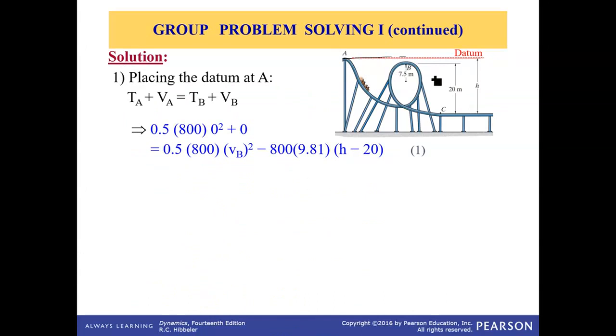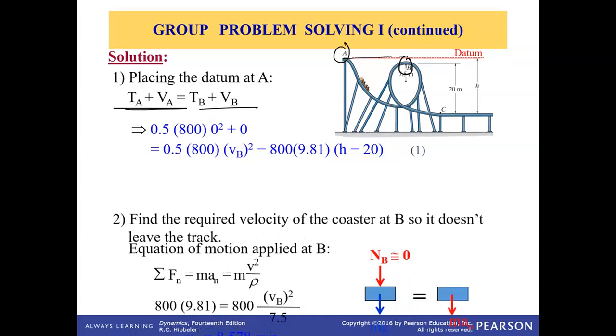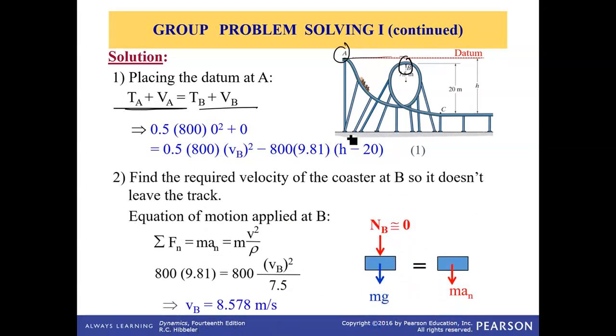Between point A and point B, conservation of energy equation is applied. That means TA plus VA equals TB plus VB, where T is kinetic energy, V is potential energy, and this is what we get - equation one. Now this equation has unknown parameter h because we do not know that.